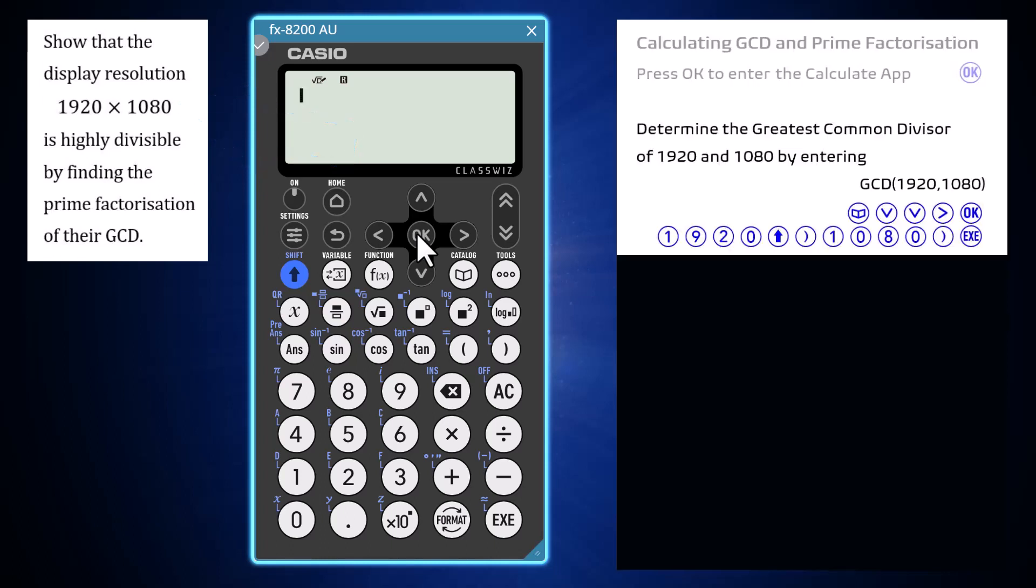To find the GCD of 1920 and 1080, press the catalogue key, then arrow down and right to open the list of numeric calculations. Press OK to enter the GCD command which is at the top of this list.